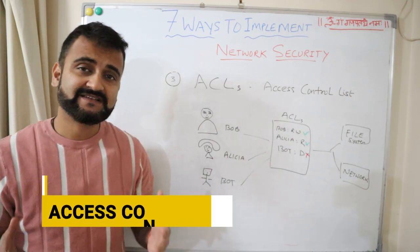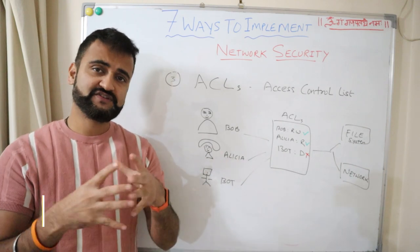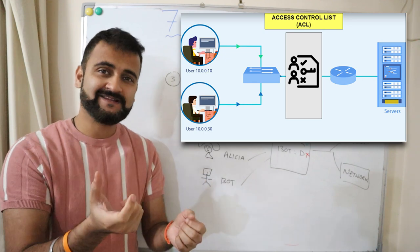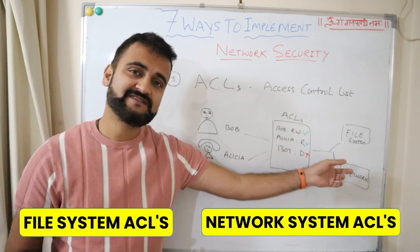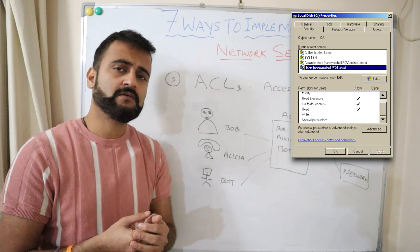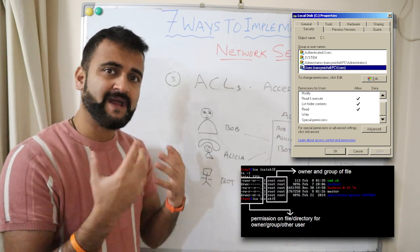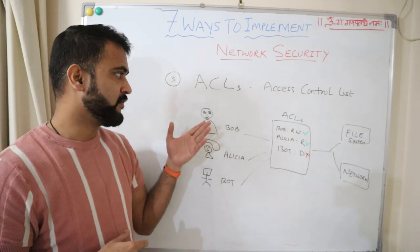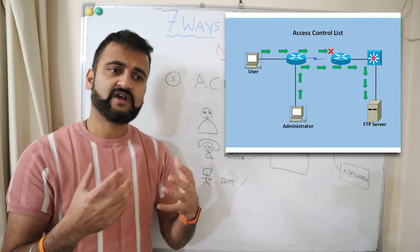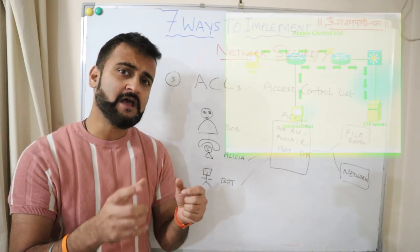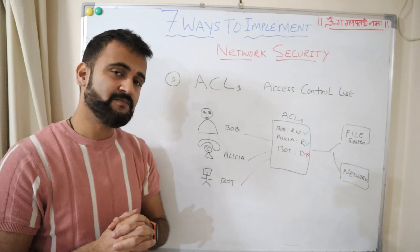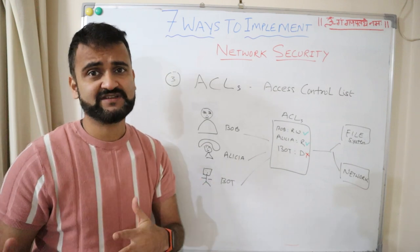The third method is using Access Control Lists (ACLs). An ACL is a set of rules that lets you manage granular user access on your network devices — switches, routers — and also on files and operating systems. There are two types: file system ACLs and network ACLs. For example, you can decide that Bob has read-write permission, Elisha has write permission, and a bot gets denied. ACLs manage all granular access very seamlessly without having to configure every user individually.